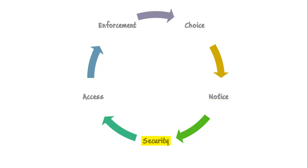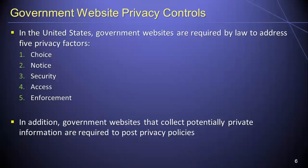With respect to security, private information collected from individuals via a government website must be secured against unauthorized use. With respect to access, individuals who have provided private information via a government website must be able to view, evaluate, and contest the accuracy of the data collected about them. Finally, with respect to enforcement, a government agency whose website fails to comply with established information practices will be subject to sanctions. Beyond these five factors, government websites in the United States which collect potentially private information are also required to provide privacy policies.